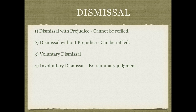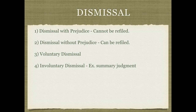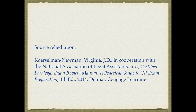Not every complaint results in a full trial — in fact, most things are settled before they ever make it to trial. A dismissal with prejudice means it cannot be refiled — the court is really angry that this lawsuit even existed. A dismissal without prejudice means it can be refiled because there was just some technical error along the way. A voluntary dismissal is where the parties agree to just dismiss the case. An involuntary dismissal is an order by the court — for example, a summary judgment where the court says there's really no dispute here, so I'm going to find in favor of either the plaintiff or the defendant, and there's no need to bring this to a full trial.